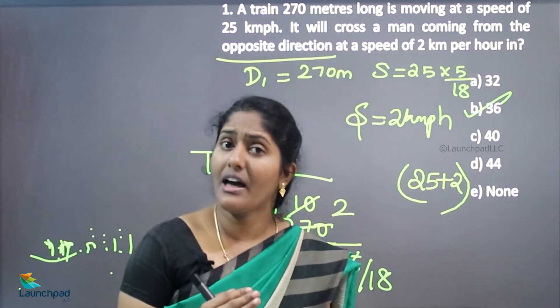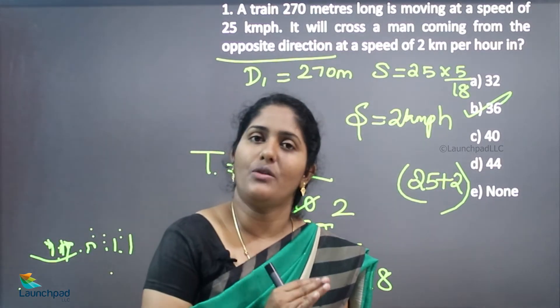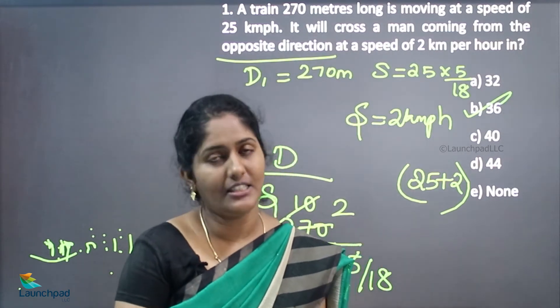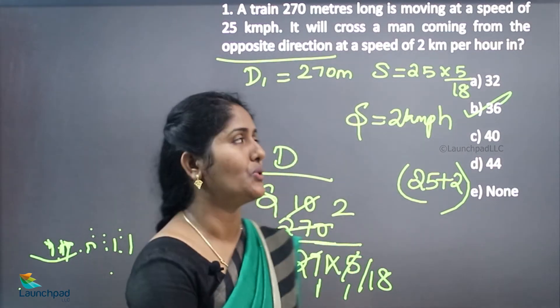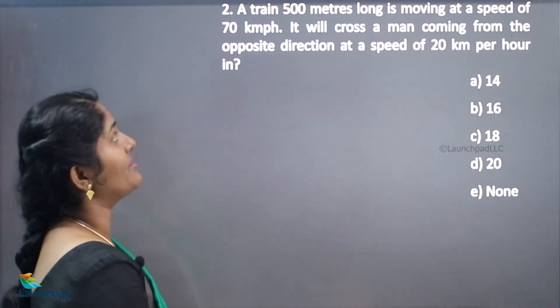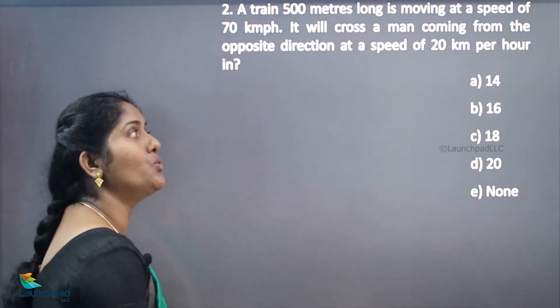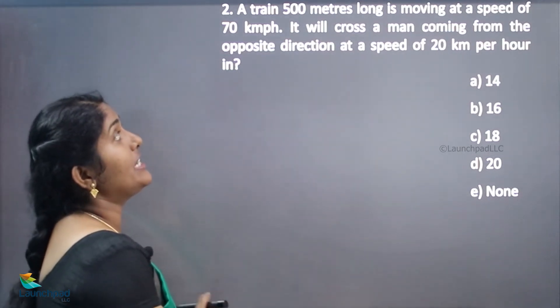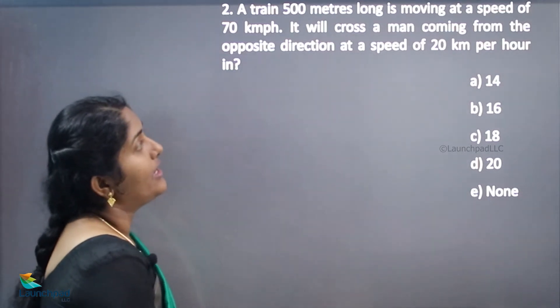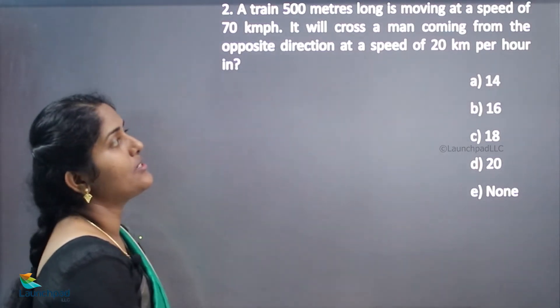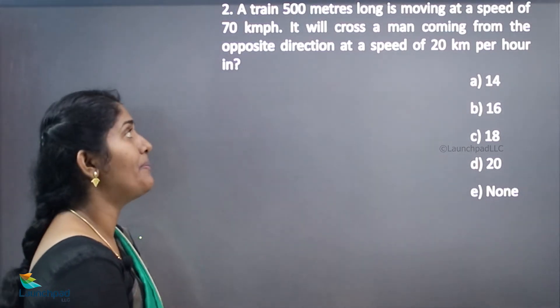Here we have one train and one man. This is a case 3 example. Let's see another question. A train 500 meters long is moving at a speed of 70 kilometers per hour. It will cross a man coming from the opposite direction at a speed of 20 kilometers per hour.